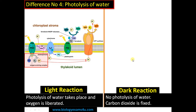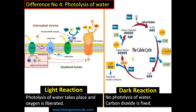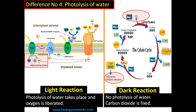Whereas in dark reaction there is no photolysis of water. In dark reaction, carbon dioxide enters the Calvin cycle where it is fixed or reduced to carbohydrate or glucose (C₆H₁₂O₆). You can see here that the ATP and NADPH synthesized during light reaction are used in the Calvin cycle for the synthesis of glucose.